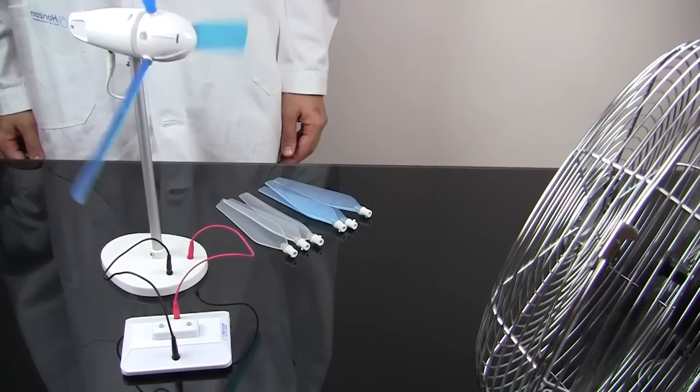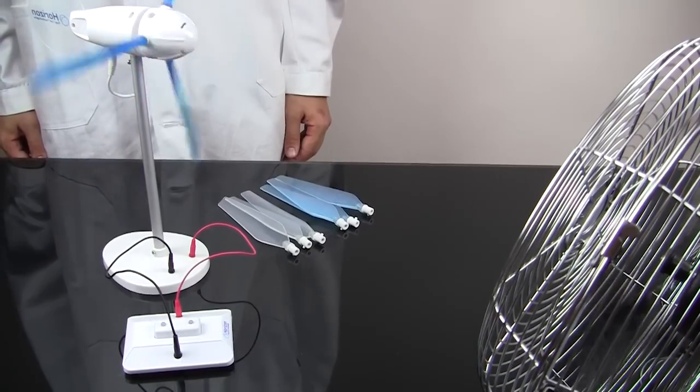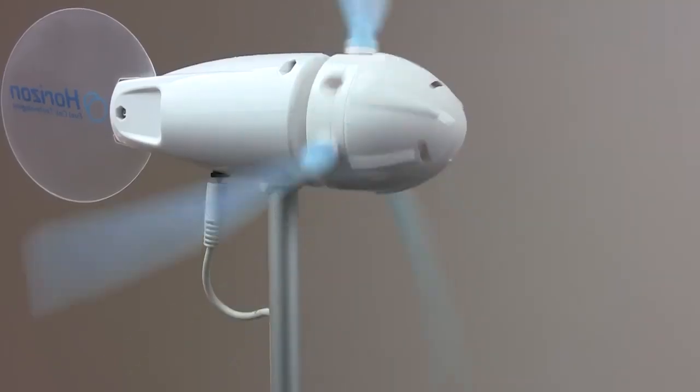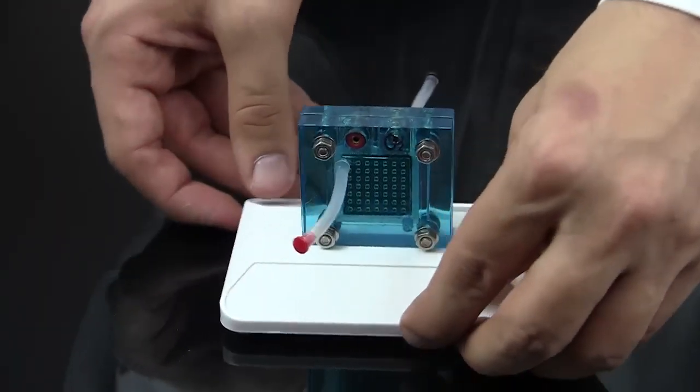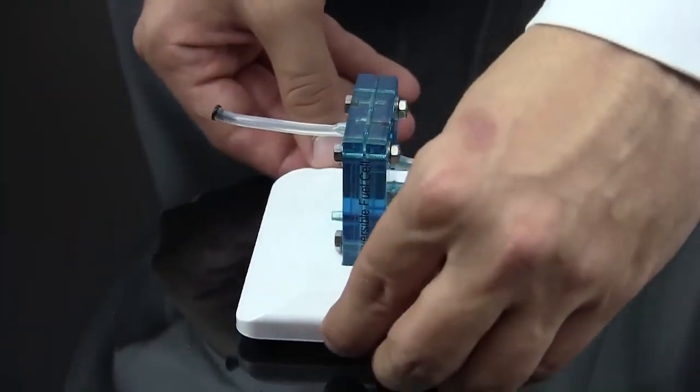Students can easily change the number, type, or angle of the blades during the experiments. A reversible hydrogen fuel cell lets students generate hydrogen gas from water, then use it as a fuel to produce an electric current.